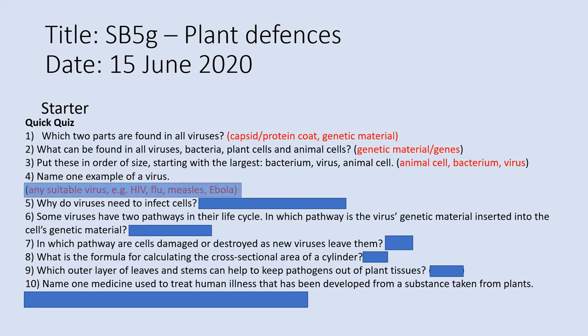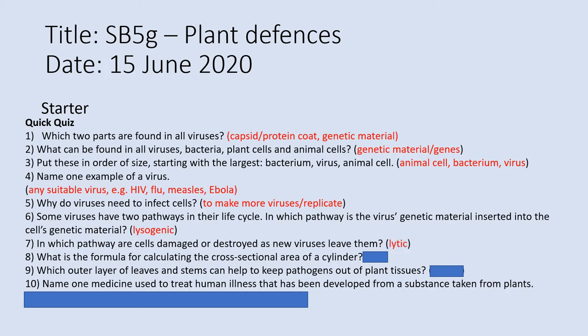One example of viruses — there are lots of examples — but HIV, flu, measles, Ebola, or coronavirus now would be good. Why do all viruses need to infect cells? So they can make copies of themselves. Some viruses have two pathways in their life cycle. In which pathway is the genetic material inserted into the cell's genetic material? That is the lysogenic pathway, the one that repeats. In which pathway are cells damaged or destroyed as new viruses leave them? It is the lytic pathway.